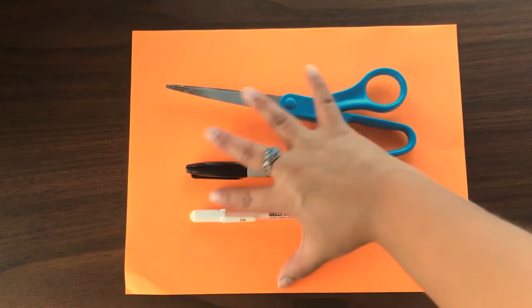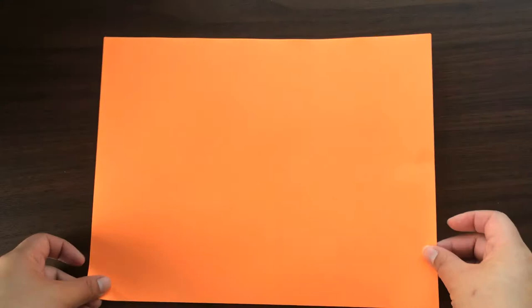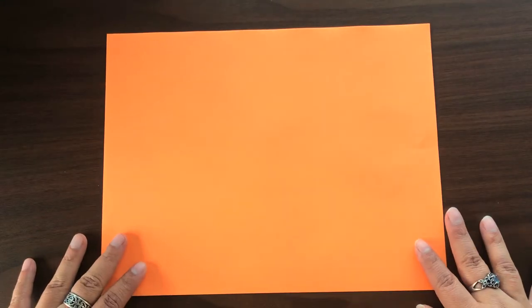To start, you will need to make a square of paper. The size of your square will determine the size of your butterfly. I'll be starting with a regular 8 1⁄2 by 11 sheet of orange paper.